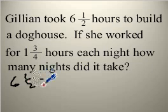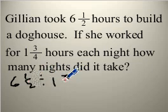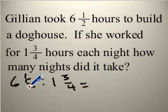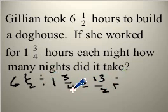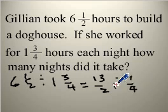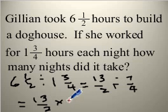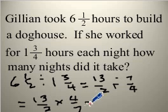Six and a half divided by one and three quarters. To complete this calculation, we need to change these into improper fractions, so we have 13 halves divided by 7 quarters. To complete the calculation, we change it to a multiplication question: 13 halves times the reciprocal. The reciprocal of 7 fourths is 4 sevenths, so we end up with 52 fourteenths.